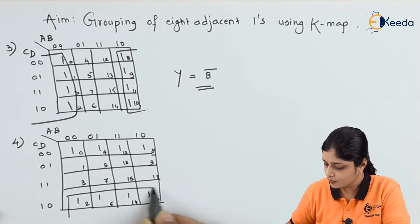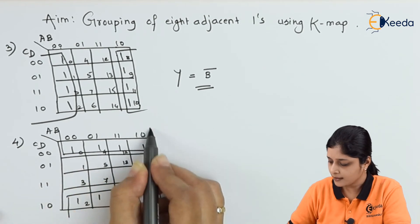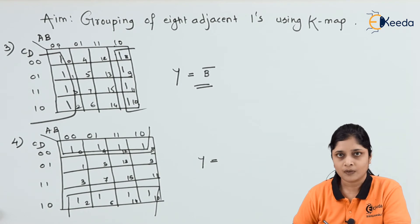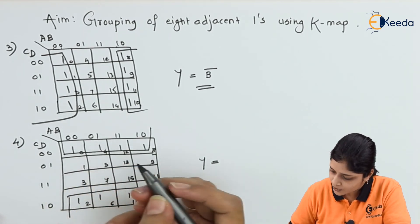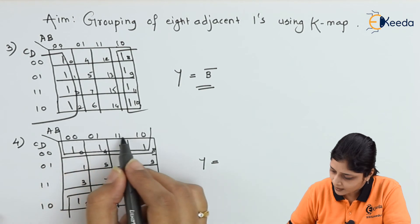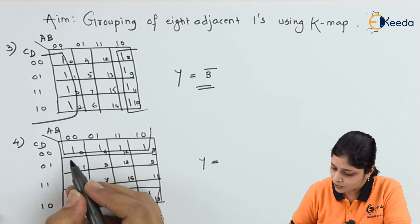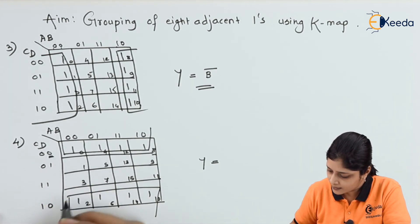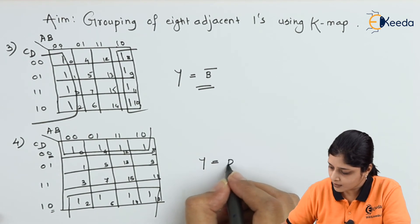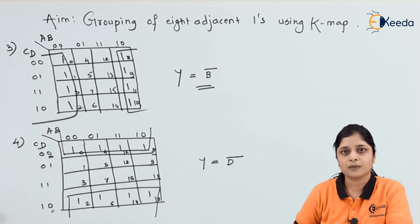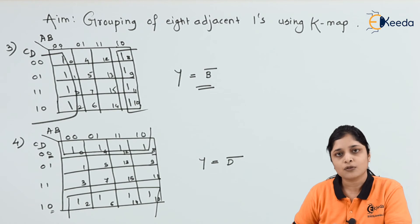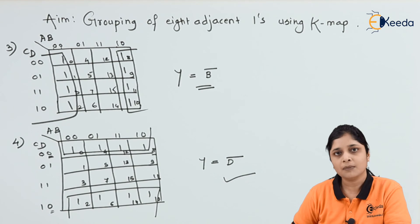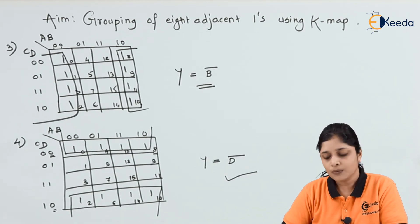According to the rule, you can make a group of 8 ones using the corner ones. Check A and B — they are changing continuously, so don't consider them. Looking at the first row and last row: D is 0 and also 0, so D is the same — write D̄. C changes from 0 to 1, so don't consider C. The final answer is Y = D̄.